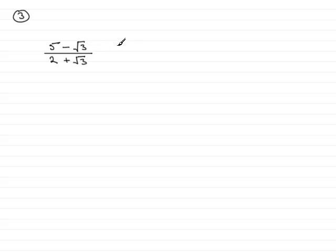Now in order to do this, it's called rationalizing. So what is rationalizing? Well first of all, let's just copy down the fraction again: 5 minus root 3 all over 2 plus root 3.